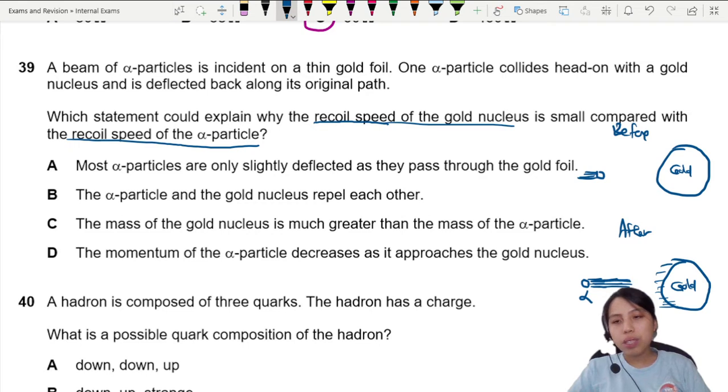Probably the small nucleus. Because momentum is conserved and p equals mv. If you have a very big mass, your velocity probably has to be smaller. So if they exchange momentum, the difference in recoil speed will probably be due to their mass.